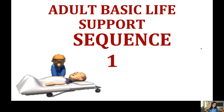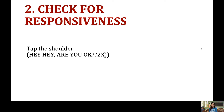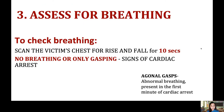For adult basic life support, the first step is to verify the scene — look left, right, up, and down to make sure you are safe before saving others. Next, check for responsiveness by tapping the patient's shoulder and saying 'Hey, are you okay?' Then assess for breathing by observing the rise and fall of the chest for not more than 10 seconds.